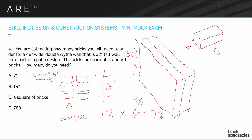So 12 courses times 6 bricks equals 72 bricks. But I tricked myself — it's a double wythe wall, so I have to double it. The same number of bricks exists on the back side of the wall as well. The actual answer is 144 bricks.